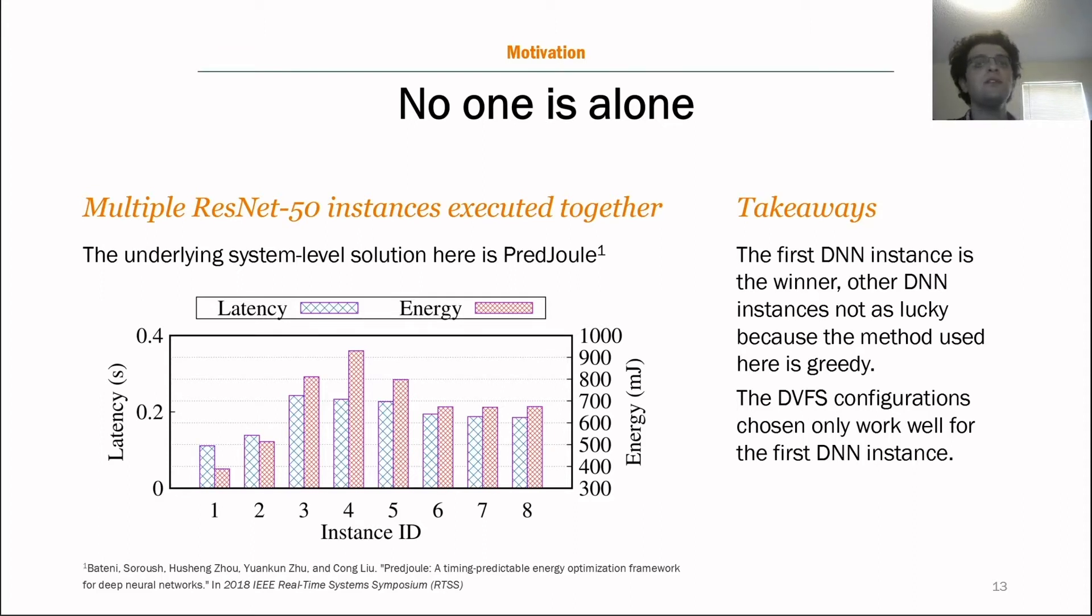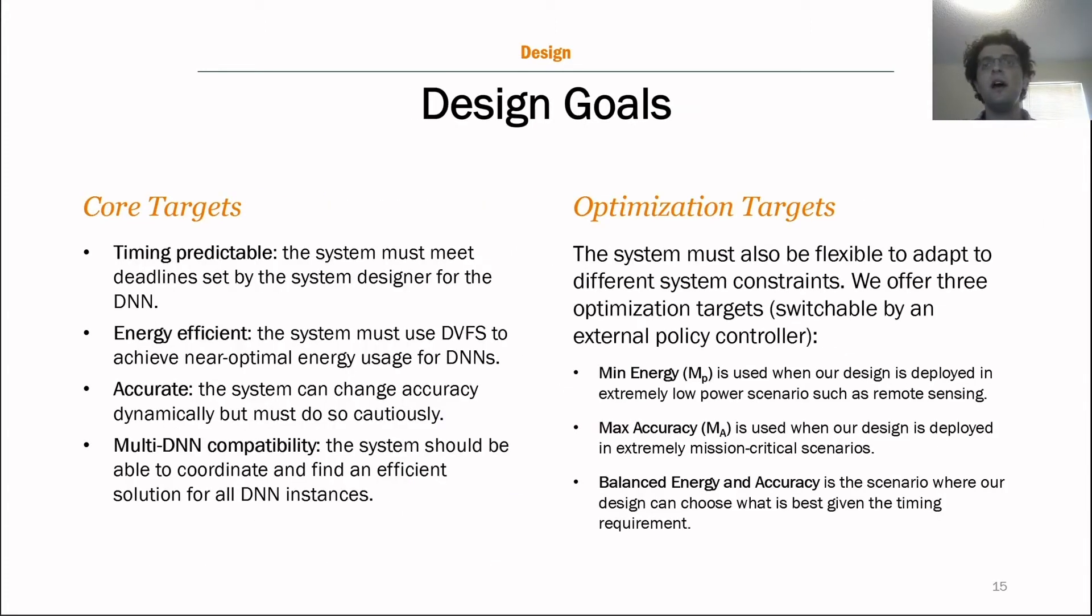One more thing we need to discuss before getting to the design. We didn't realize this until we actually tried to use this in AutoWare. But most autonomous embedded systems have multiple instances of DNN. The issue here is that adjusting DVFS configuration for one layer of one DNN instance will affect all the other DNN instances, often negatively. Here we ran our layer level system solution on eight instances of ResNet and recorded both the normalized latency and the normalized energy. As you can see, the first DNN is lucky. Well, it's greedy and therefore it is fast and energy efficient. But this greed has resulted in other DNNs performing much worse and having an uneven distribution among them.